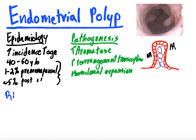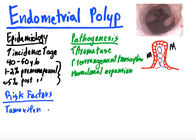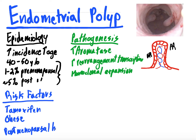Risk factors for endometrial polyps include several things. The first is tamoxifen use — patients who are on tamoxifen, having previously had breast cancer, are at increased risk for endometrial polyps, as tamoxifen modulates estrogen and progesterone receptors. Obesity is another risk factor, as obese patients secrete more estrogen. And postmenopausal hormone therapy with estrogen is also going to increase the incidence of endometrial polyps.